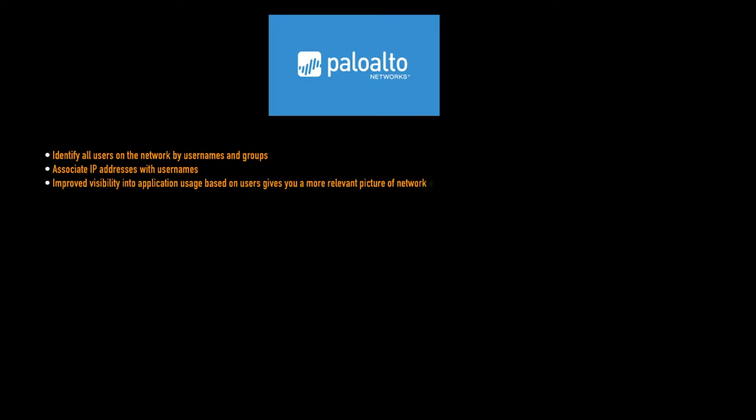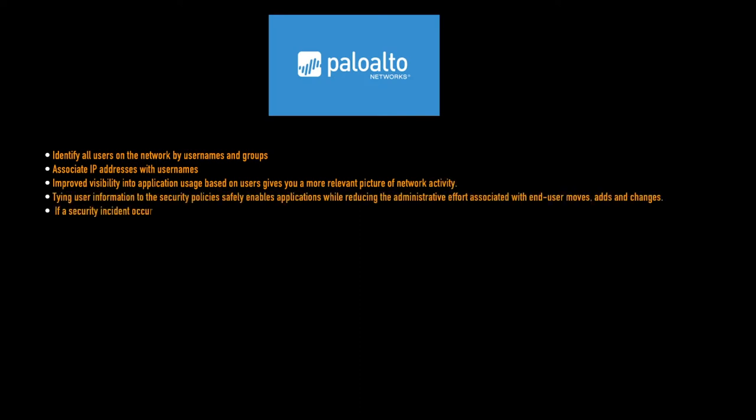Palo Alto Networks User-ID technology's purpose is to identify all users on the network by usernames and user groups, and in turn associate IP addresses with usernames. This improves visibility of application usage based on users rather than just their IP addresses. Usernames and groups can be tied to security policies that ensure users can only have access to applications needed for their day-to-day tasks and applications sanctioned by their organization.